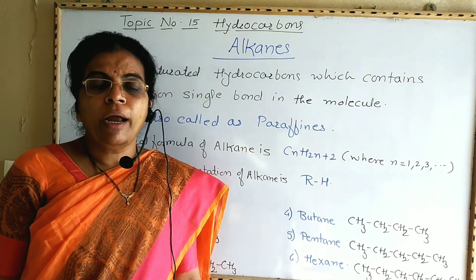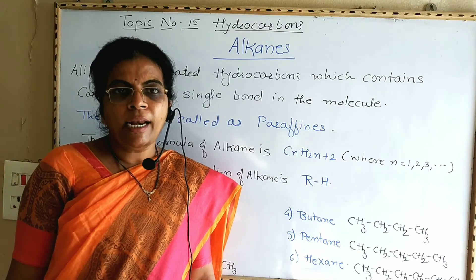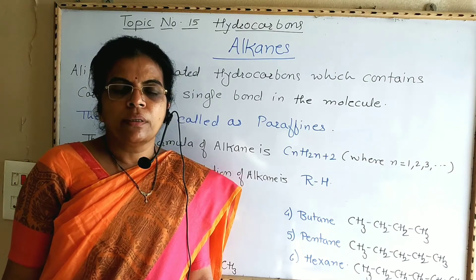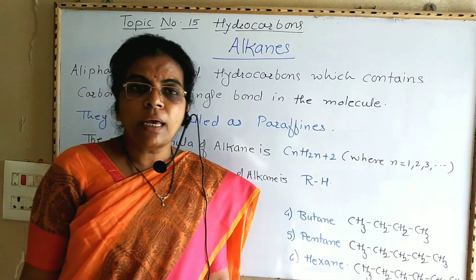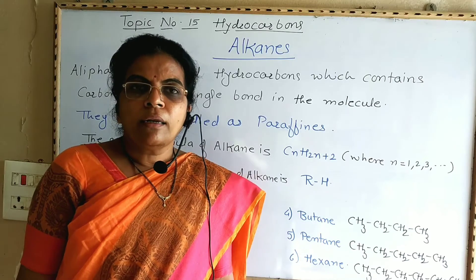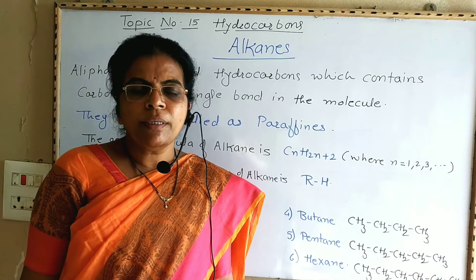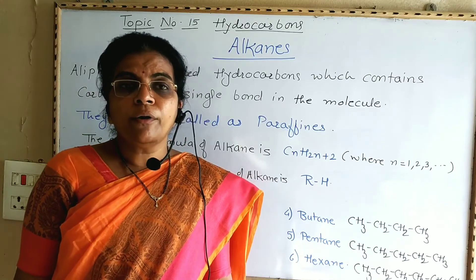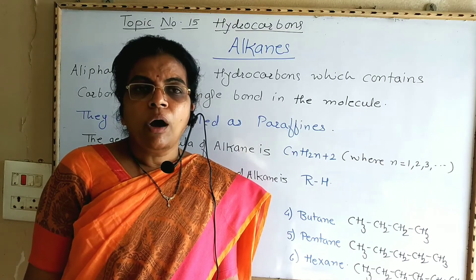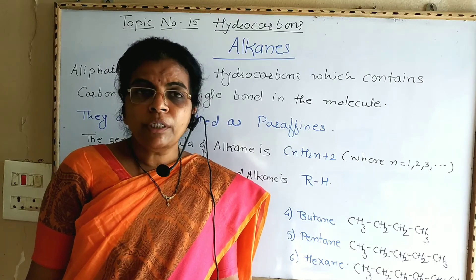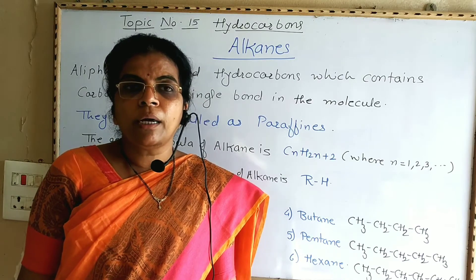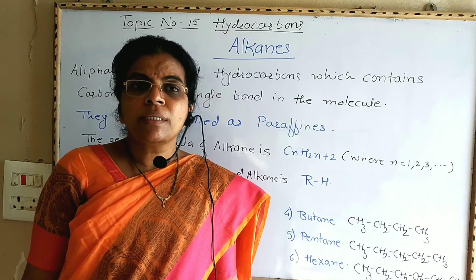Now we have seen the classification of hydrocarbons: open chain and cyclic hydrocarbons. Open chain hydrocarbons are of two types — saturated and unsaturated. Unsaturated cyclic hydrocarbons are further classified into aromatic and non-aromatic hydrocarbons. Now we are going to see all these hydrocarbons in detail, starting first with open chain saturated hydrocarbons, which are nothing but alkanes possessing carbon-carbon single bond in the molecule.